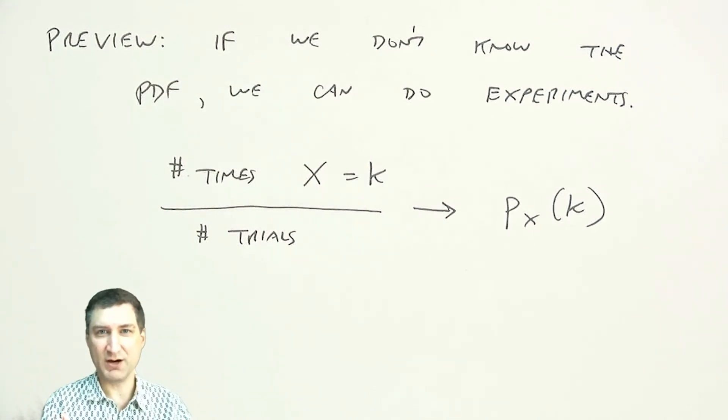So there's one more important random variable I want to talk about, but I'm going to save it to the next lesson because I want to give it a special treatment all on its own. That's called the Poisson random variable. Maybe I'll see you there.